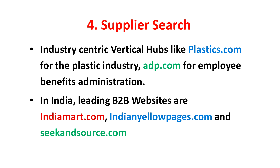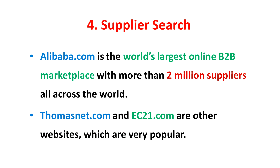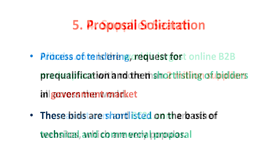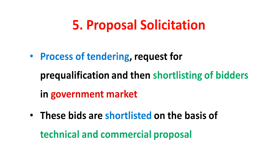These websites can be grouped under industry-centric vertical hubs, like plastics.com for the plastic industry and adp.com for employee benefit administration. In India, indiamart.com, indianyellowpages.com, and seekandsource.com are leading business-to-business websites. Hong Kong-based Alibaba.com is the world's largest online B2B marketplace, with a community of more than 2 million suppliers across the world. thomasnet.com and ec21.com are other very popular websites.